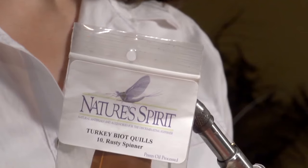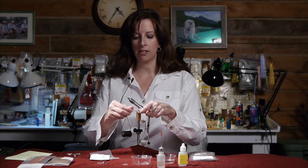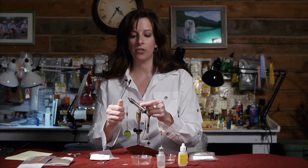Now I'm going to tie in my biot. And I like to use turkey biot quill from Nature Spirit. I'm using the rusty color. I like to use Nature Spirit because you seem to get a lot of good biot quills from one package. And I also soak the biot because it makes it more pliable and easier to work with.